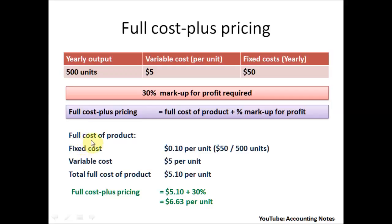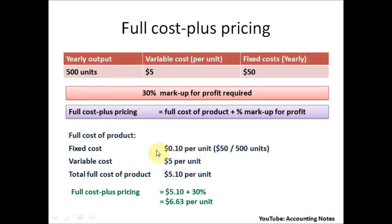First, we need to find the full cost of the product, which is based on fixed cost and variable cost. The fixed cost per unit is calculated by taking the total fixed cost of $50 and dividing it by the yearly output of 500 units, giving us $0.10 per unit.